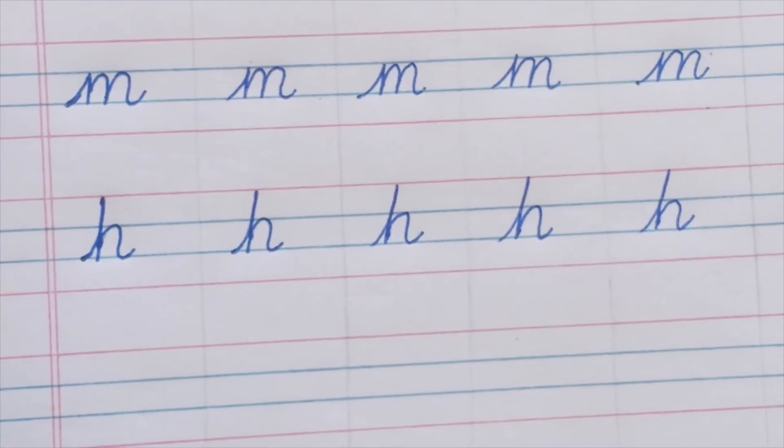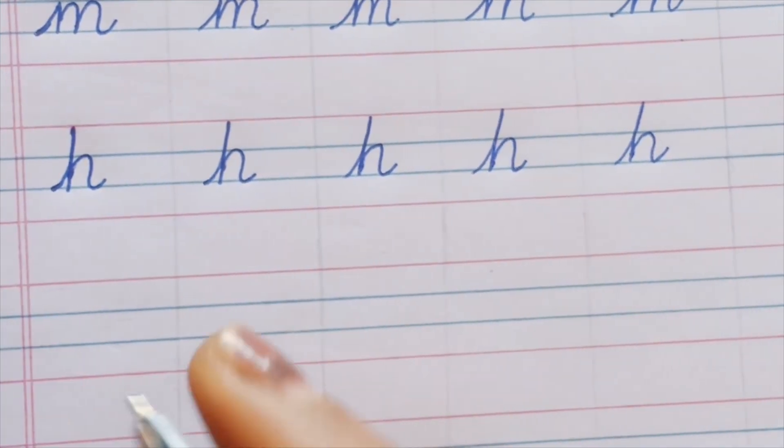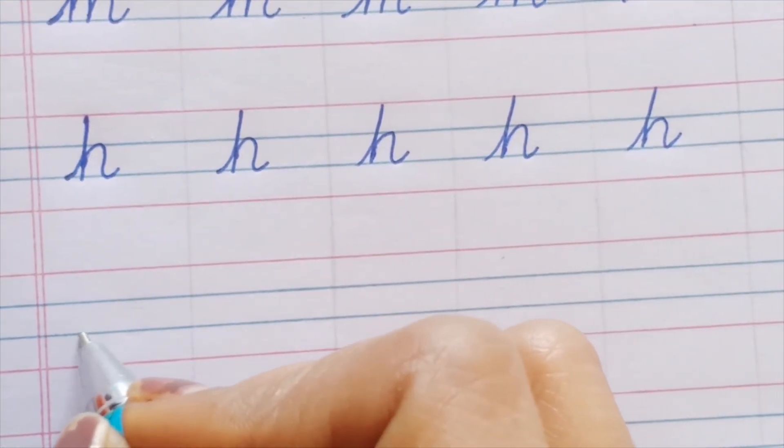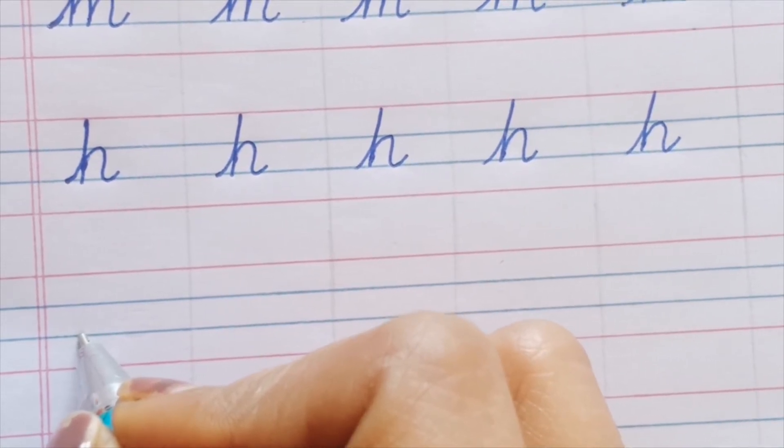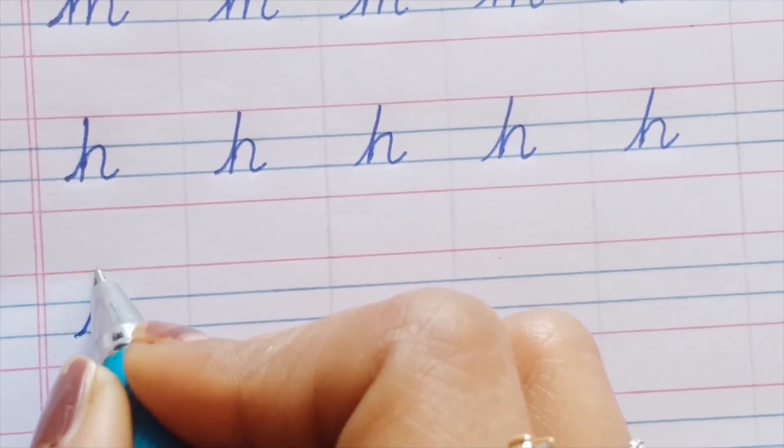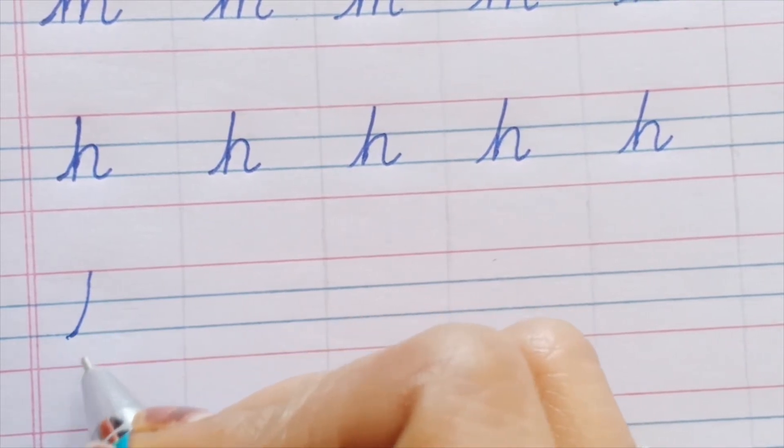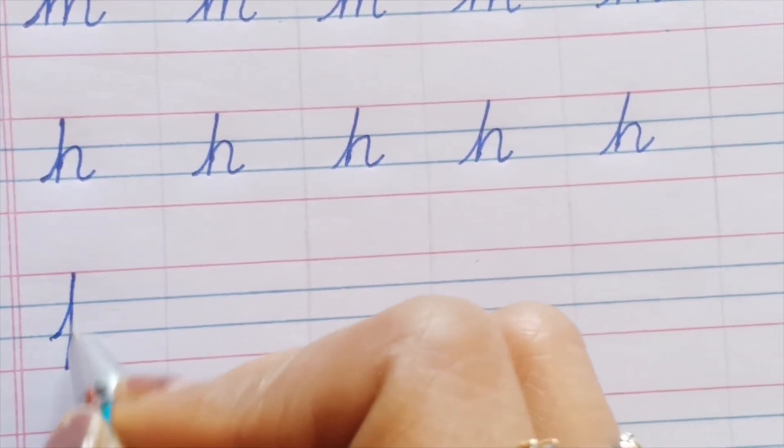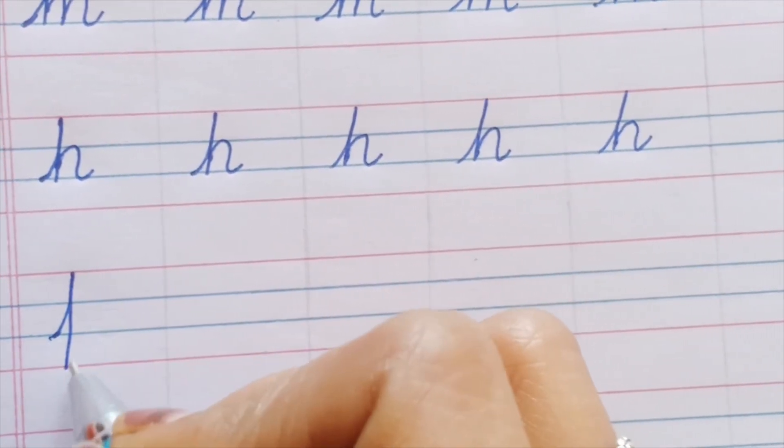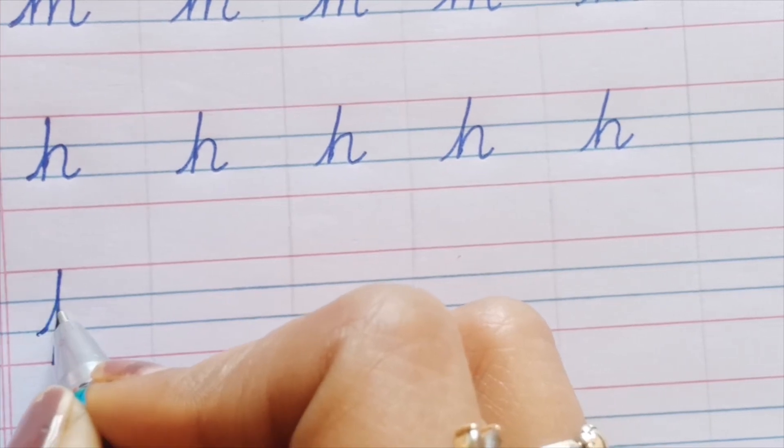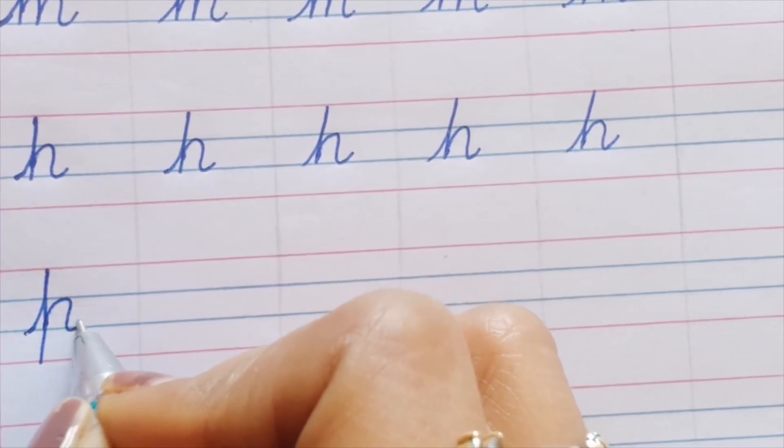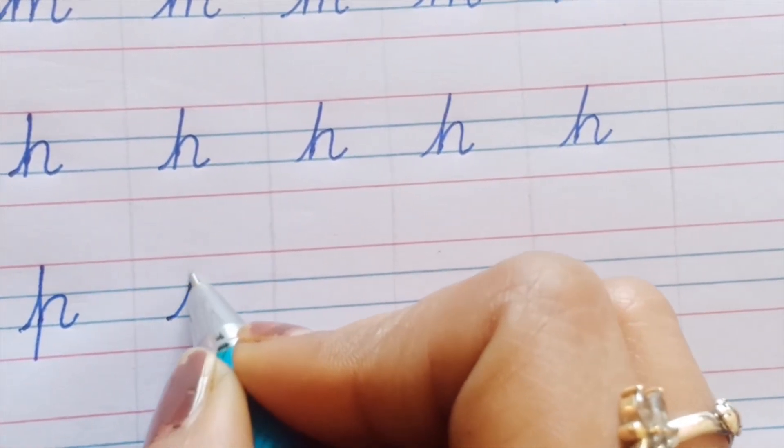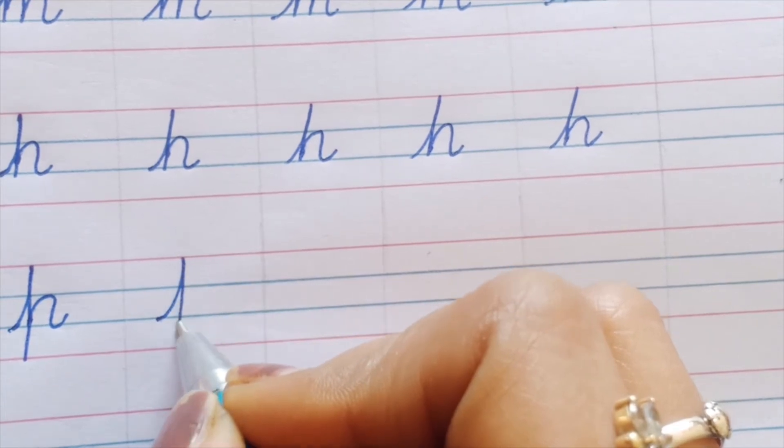Now, the other letter is quite similar with the 'h'. Let's see what that is. That is small 'p'. We'll start from the third line, bring it up to the top, but this time we will bring it down to the baseline. This is another straight line downwards.